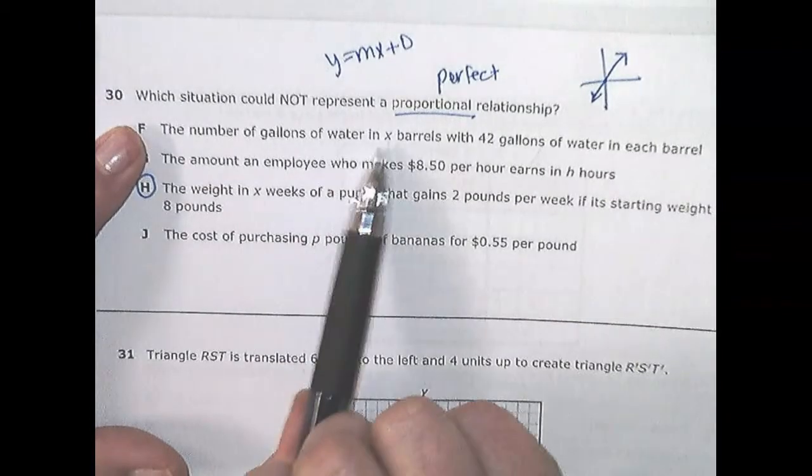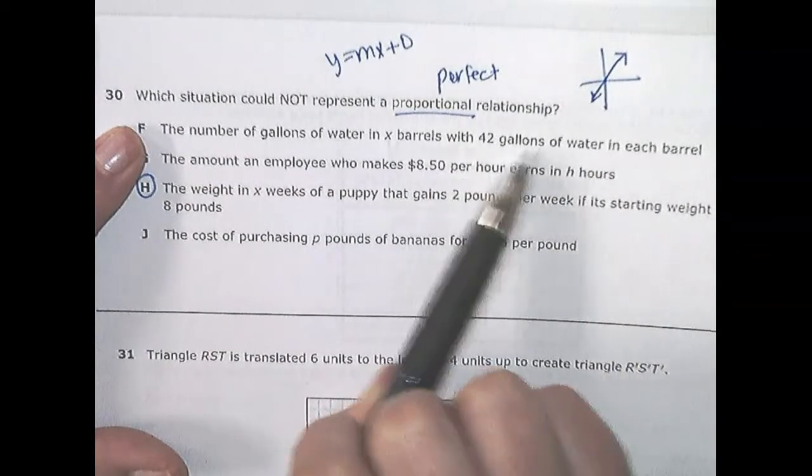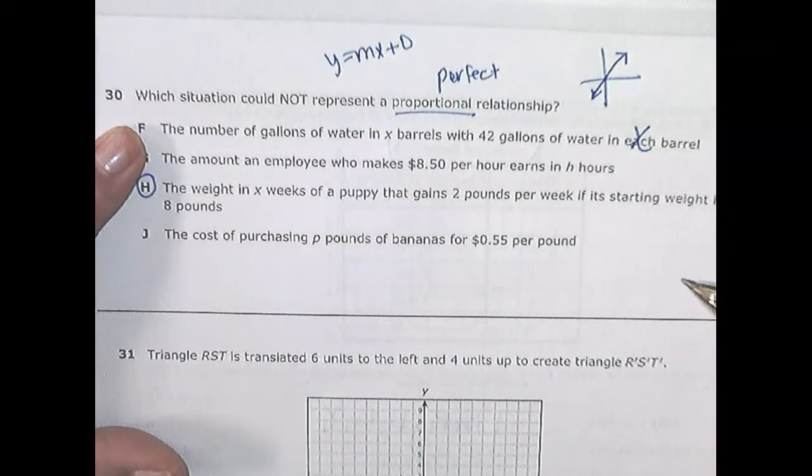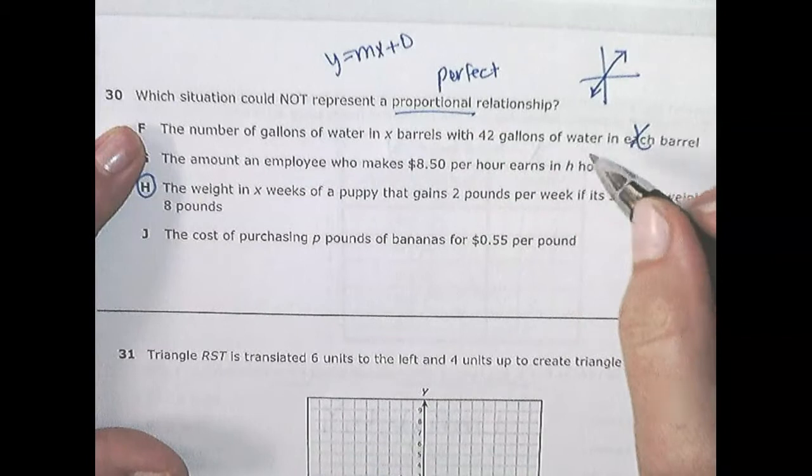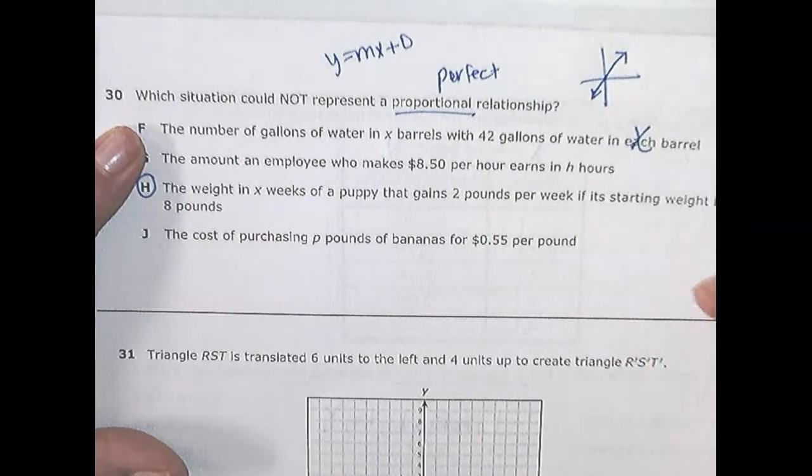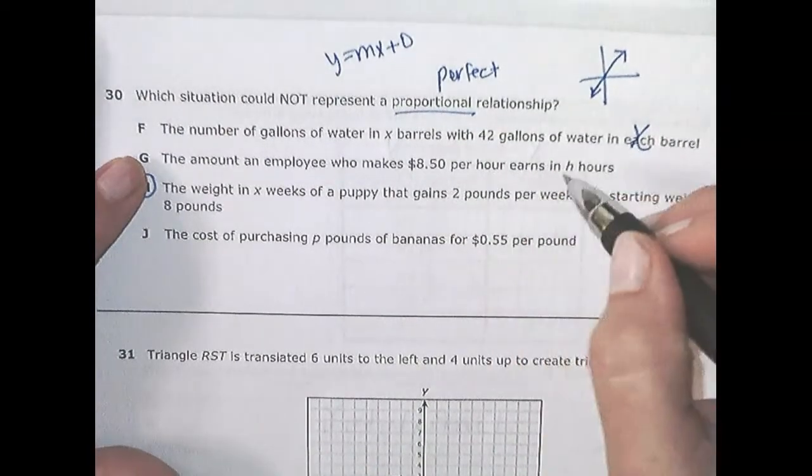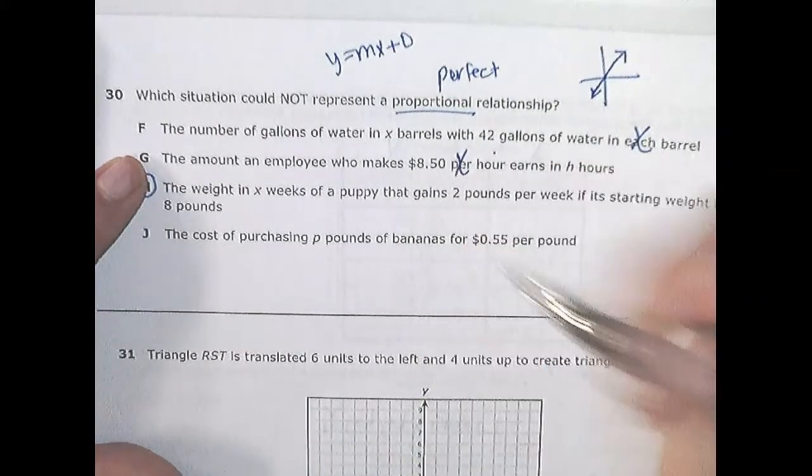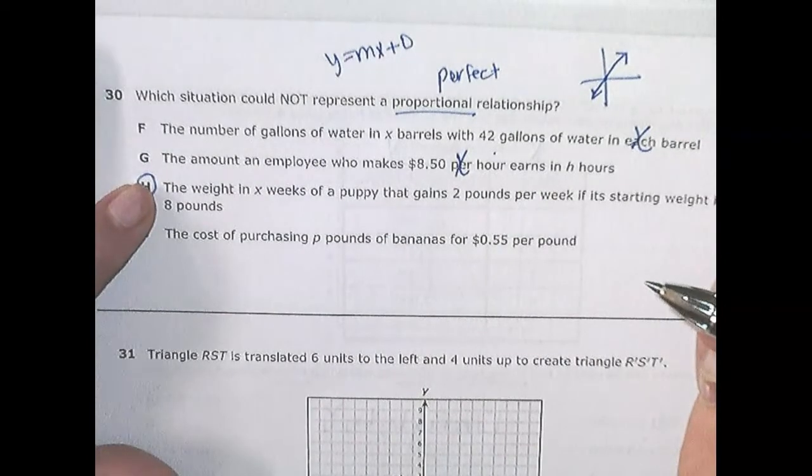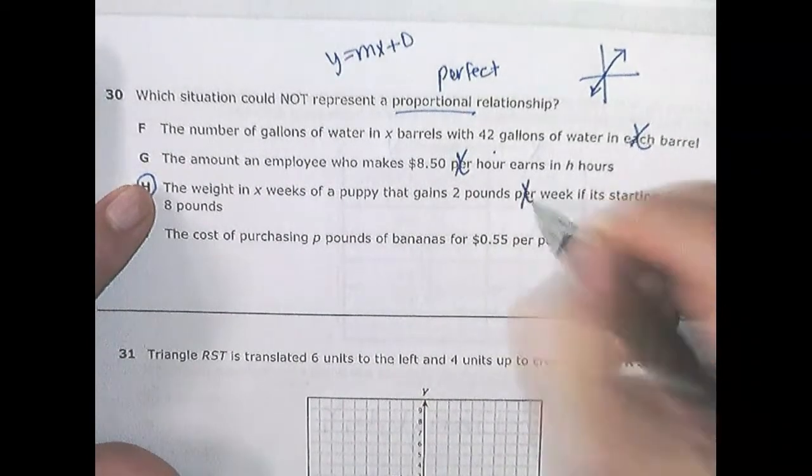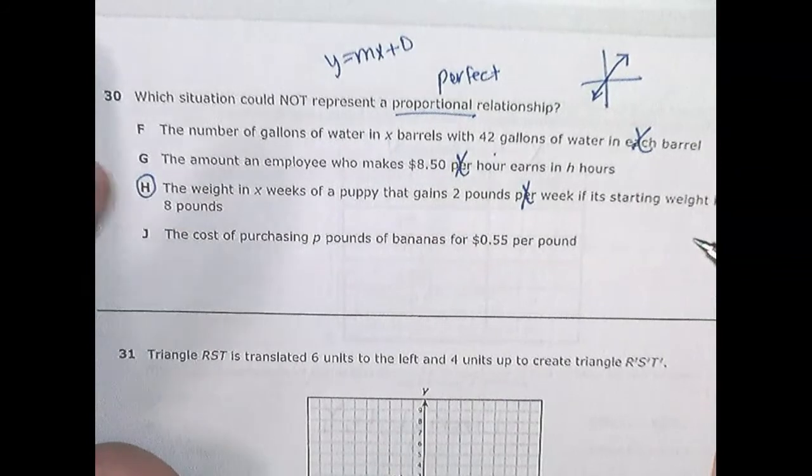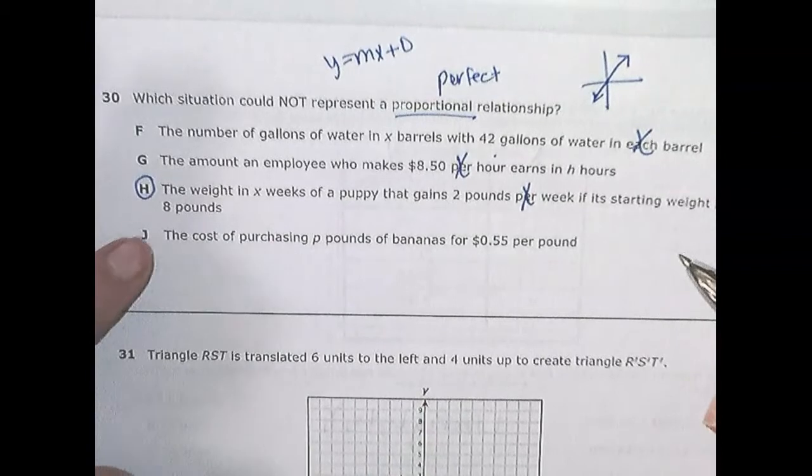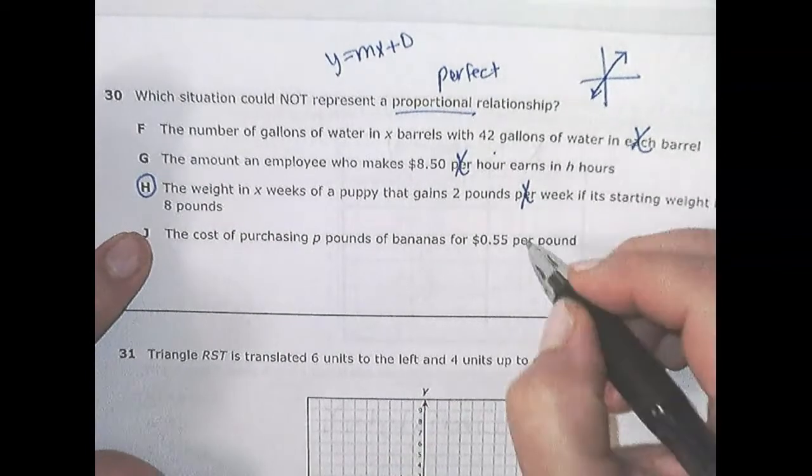So the number of gallons in this many barrels with 42 gallons of water in each barrel. I want to put my variable on each. An amount a boy makes per hour earned in this many hours. And there's my per.